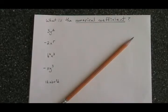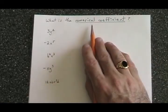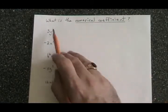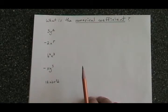When working with polynomials, we are sometimes asked, what is the numerical coefficient of a monomial? Numerical coefficient simply means the big number at the beginning of the collection of terms that are being multiplied together.